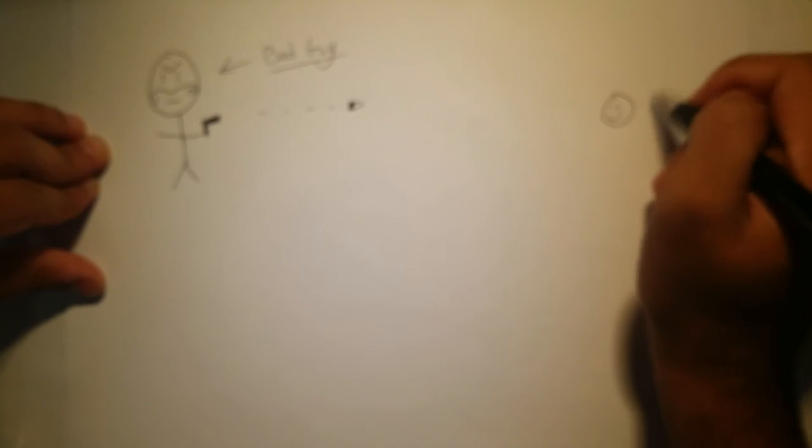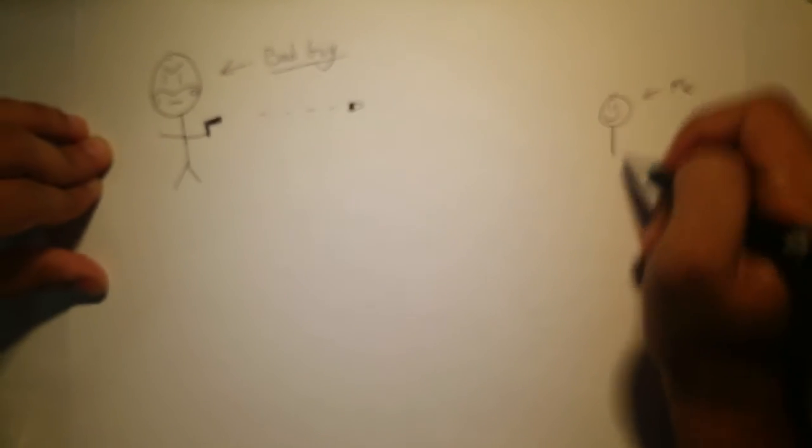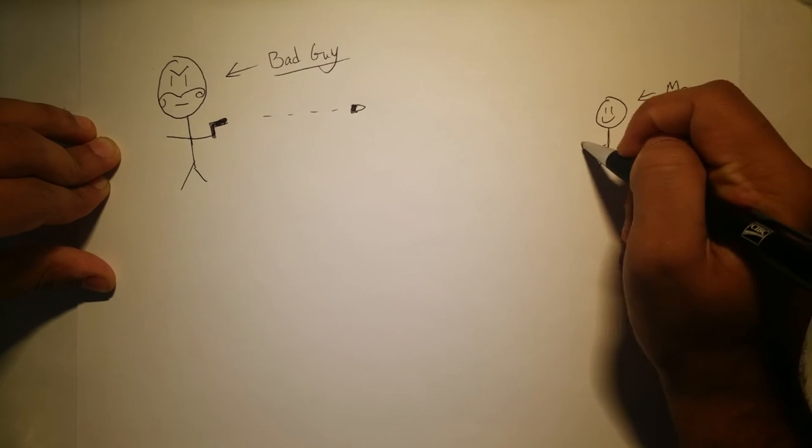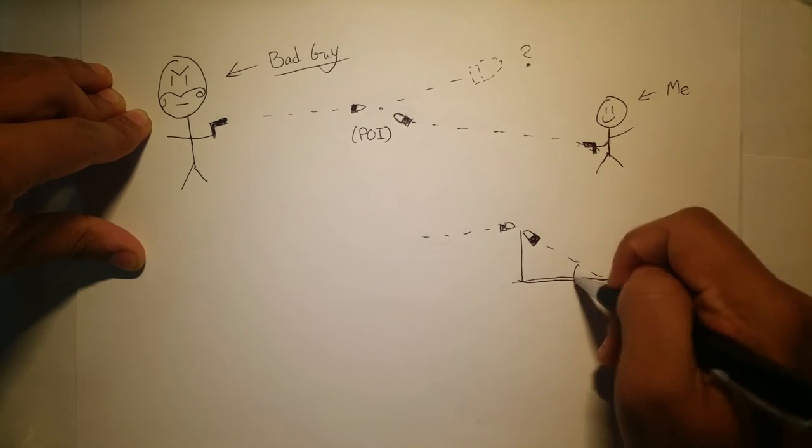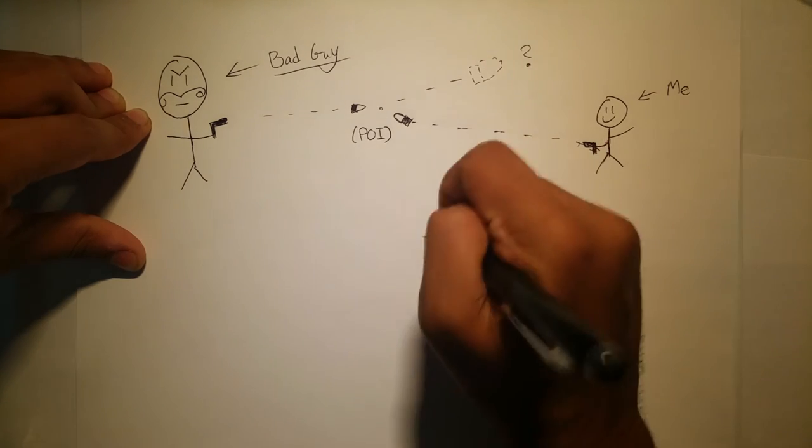Well, not quite. One way to try to save yourself is by trying to deflect the bullet. What I mean by this is aiming at the oncoming bullet at an angle.